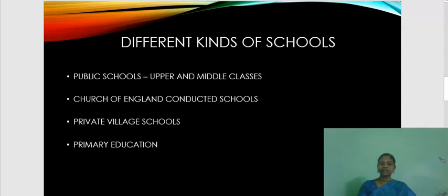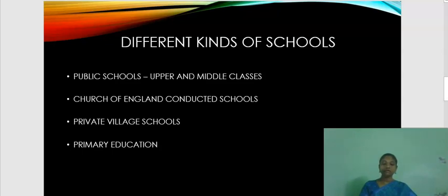There were many kinds of schools in England in the earlier period. There were public schools which provided education at a high charge for the upper and middle class people. For the benefit of the poor people, the National Society under the guidance of the Church of England conducted schools where they had to pay only small fees. Roman Catholics were forced to run their own institutions as they were shut out from government schools by law. Some schools were well conducted but very expensive, while some private schools were cheap but not managed properly. Most private village schools were far below the standard, and there was no central authority to control educational activities. Primary education for poor people was neglected in England in the 18th and 19th century.